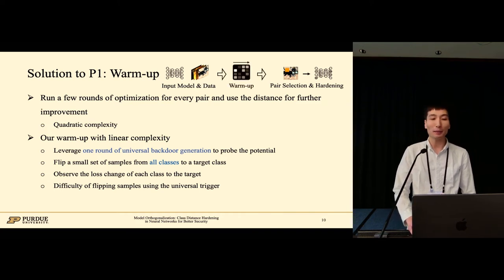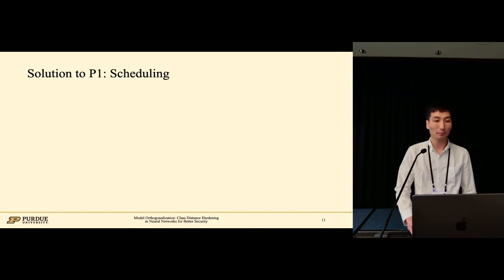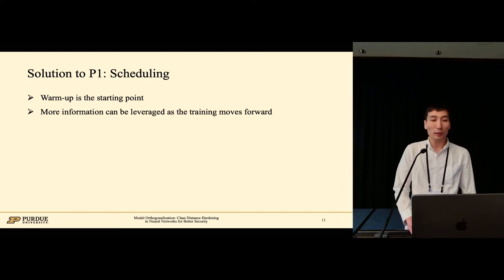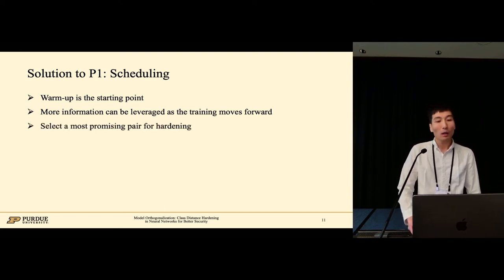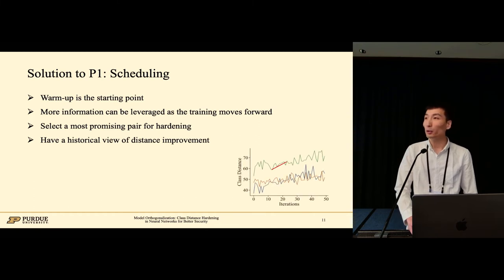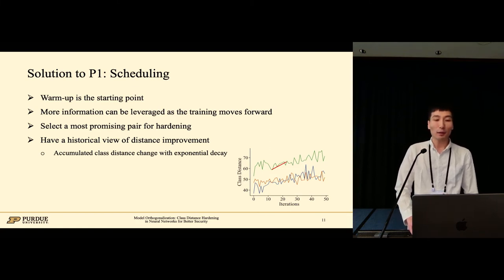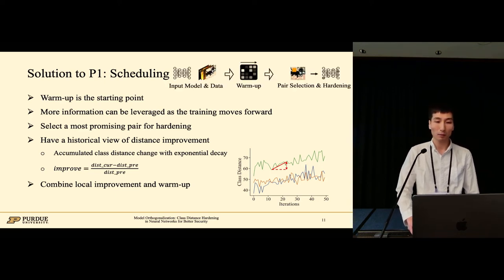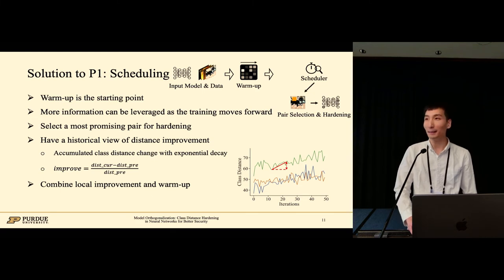This shows how the warm-up comes in our hardening pipeline. The warm-up is the starting point. With the training moving forward, we have more information which can be leveraged. We use a scheduler to select the most promising pair for hardening based on a historical view of distance improvement. Specifically, we make use of accumulated class distance change to update each pair's potential, which is the relative improvement of the current distance over the previous one. The local improvement is then combined with the results from the warm-up. The scheduler is then added in our hardening.